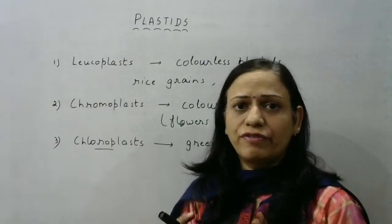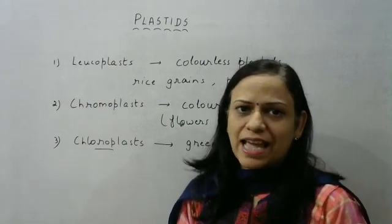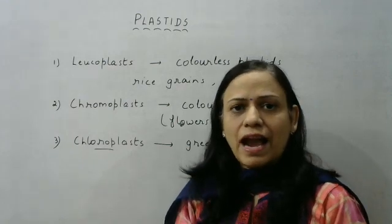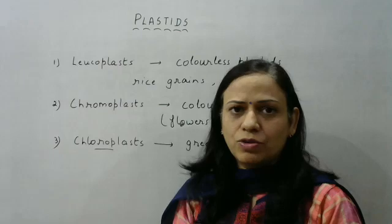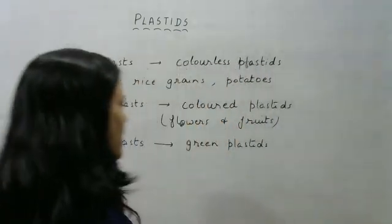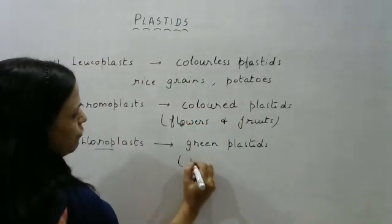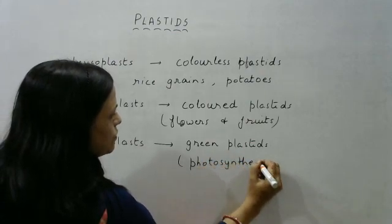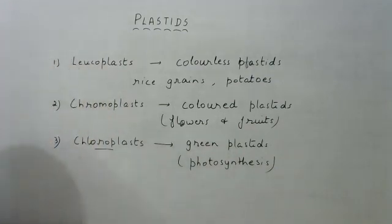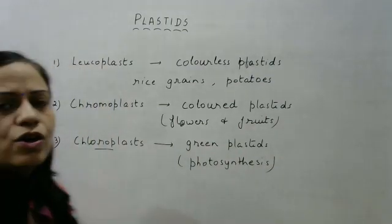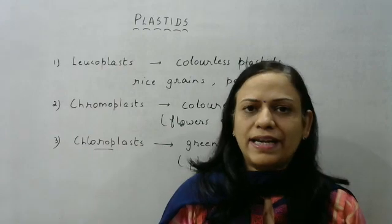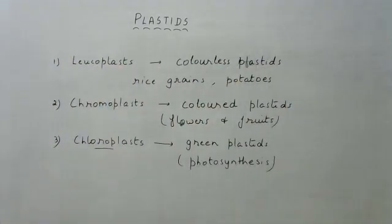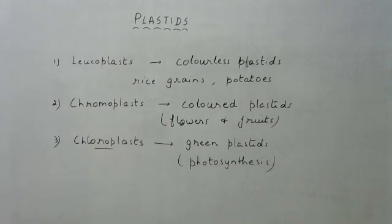Now we'll be talking about the detailed structure of a chloroplast — what are the various parts in it and what are the functions associated with those parts, because chloroplasts basically help in photosynthesis. These plastids are present in every leaf or every green part of the plant, and we need to know in detail how they function. So let's study the detailed structure of the chloroplast.